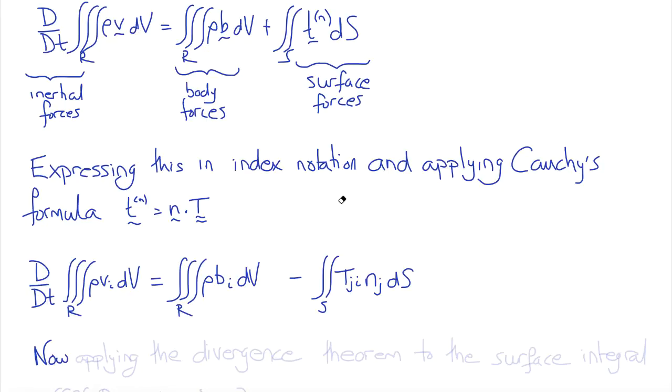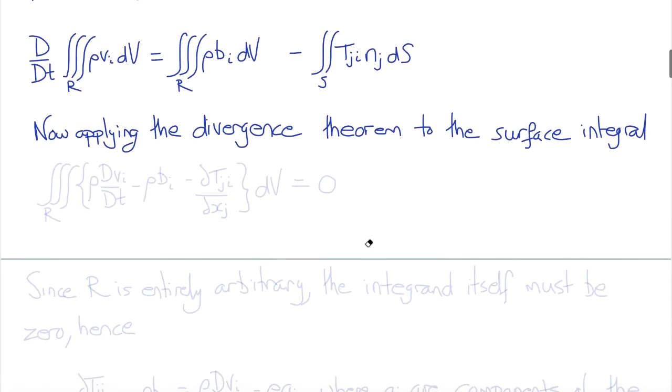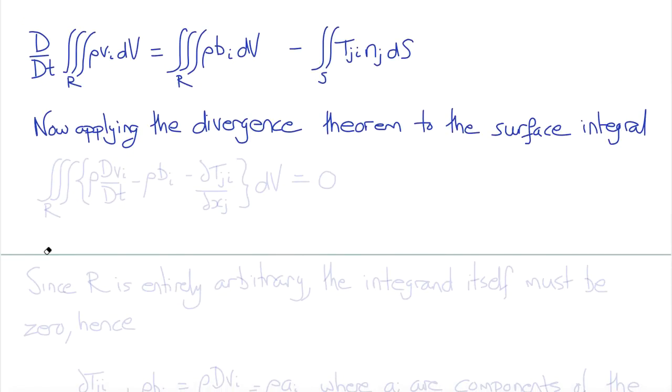Now, as we did before when we derived equilibrium equations, we apply the divergence theorem to convert the surface integral into a volume integral, which yields three volume integrals that we can collect together as a triple integral over R of rho dvi/dt, that's the inertial force term, minus rho Bi minus del TjI del xj. So this is the divergence of the stress tensor integrated with respect to volume equals zero.